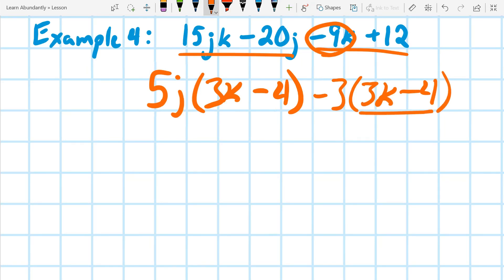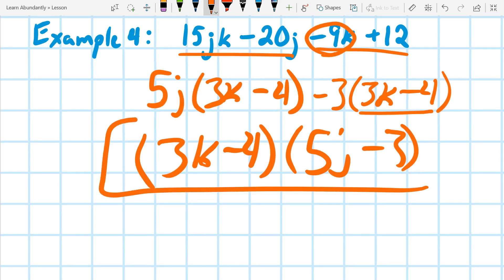Always a hint, if you have a negative in front, I almost always take out a negative, because I'd rather have the first term positive. So when we look at this, we now have 3k minus 4 and 5j minus 3. And that's that.